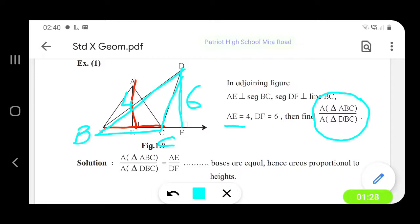BC is common in both the triangles, so we have area triangle ABC upon area triangle DBC is equal to AE into BC upon DF into BC.